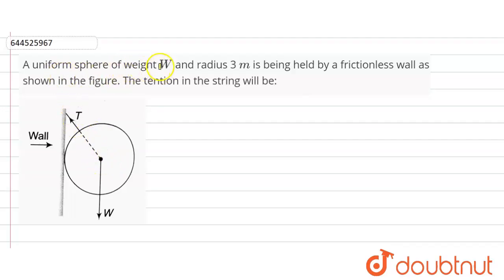A uniform sphere of weight W and radius 3 meter is being held by a frictionless wall as shown in the figure. The tension in the string will be: